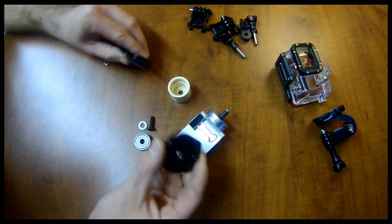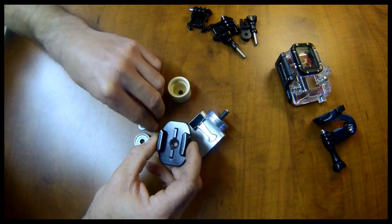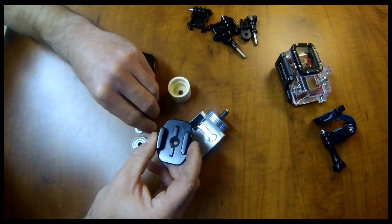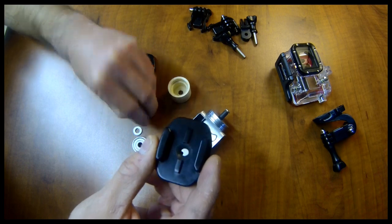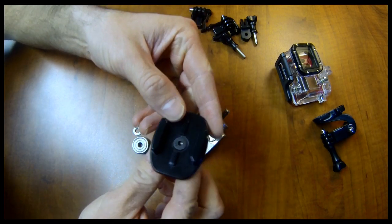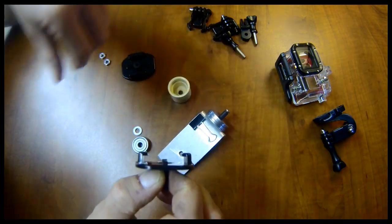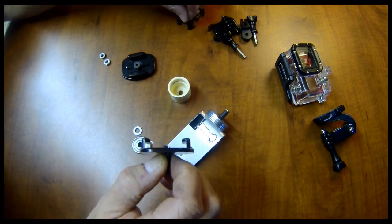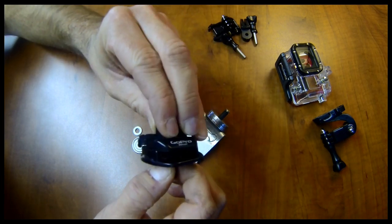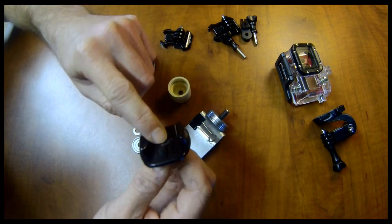You drill a hole the size of your screw in the middle and then use a countersink bit so that the screw head will sit flush. That way you can still slide your mounts on and they don't get caught on the screw head.